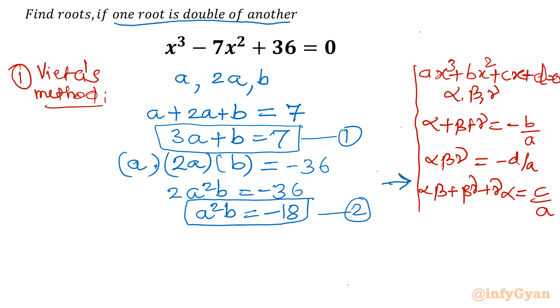Sum two at a time: I will write a × 2a, so 2a²; 2a × b, so 2ab; and b × a, so ab. That formula is c/a. Since c is not there, I will write 0. So this equals 2a² + 3ab = 0.